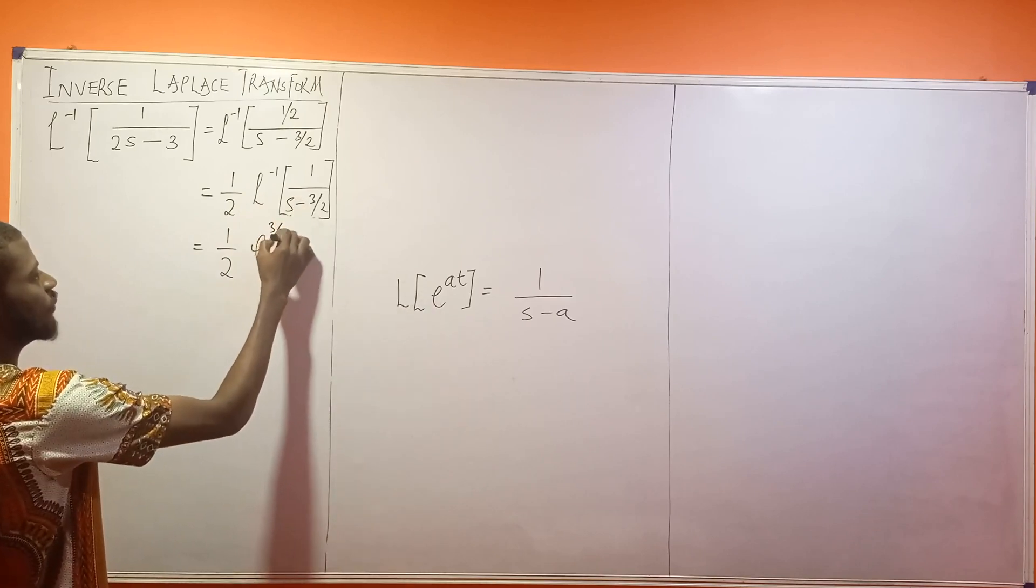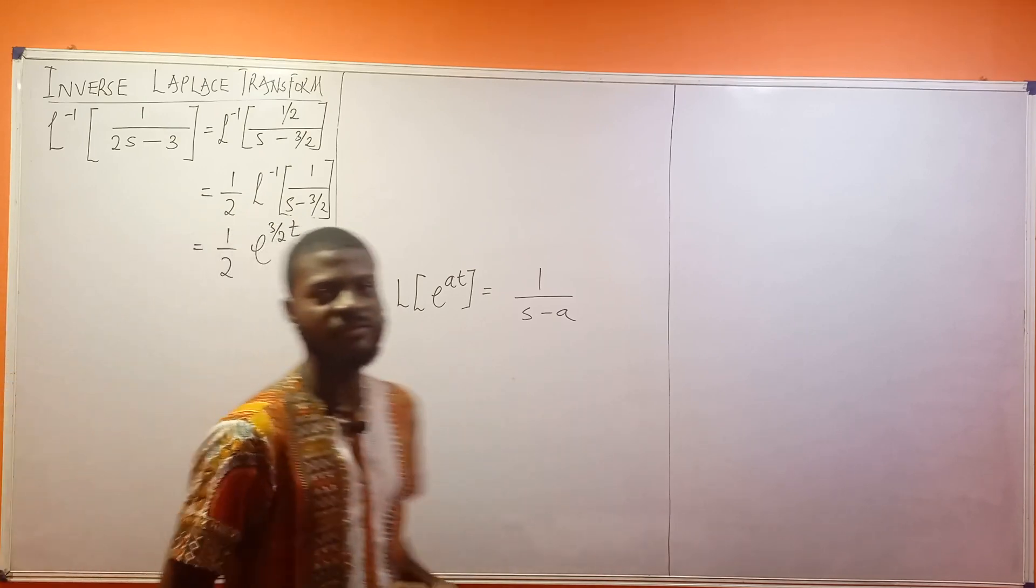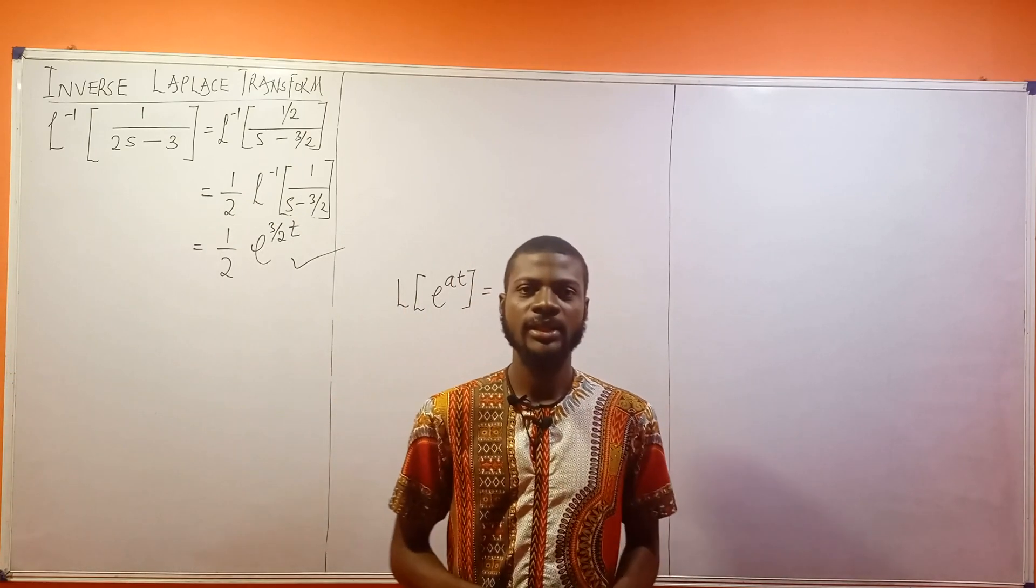a is what? 3 all over 2 times t. So this will become the result to that very question. It's a very simple one, thank you very much.